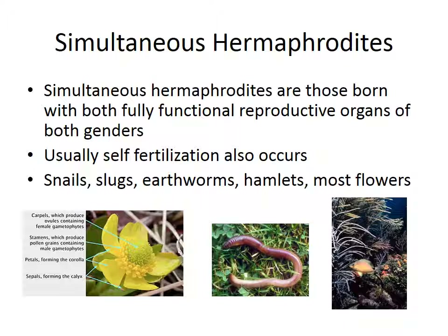There are also simultaneous hermaphrodites who are born with both fully functional reproductive organs of both genders — taking care of the problem right away. They usually self-fertilize. Here is the hamlet fish, which is a simultaneous hermaphrodite. Most earthworms, snails, slugs, and flowers are hermaphrodites too — you don't think of flowers as anything but being pretty, but they are.